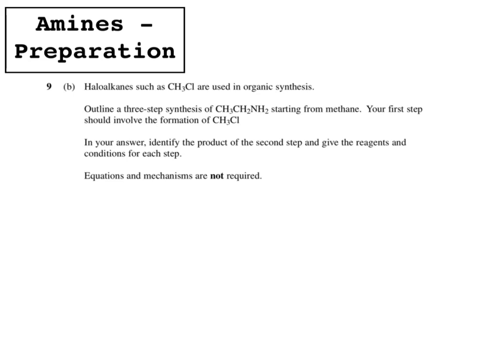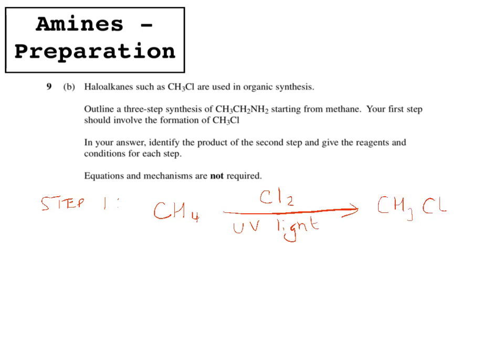Here's a typical question you may get asked. The preparation of amines may come up in organic synthesis questions. This question asks for a three-step synthesis of an amine starting from methane, where the first step involves the formation of CH3Cl. You need to identify the product for the second step and give the reagents and conditions for each step. For step 1, turning methane to CH3Cl, you use chlorine and UV light — this is free radical substitution — to make chloromethane.